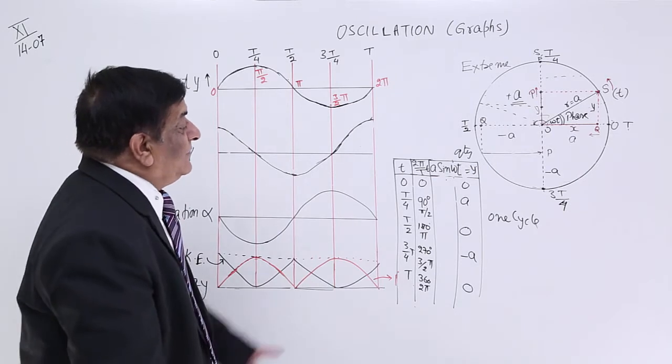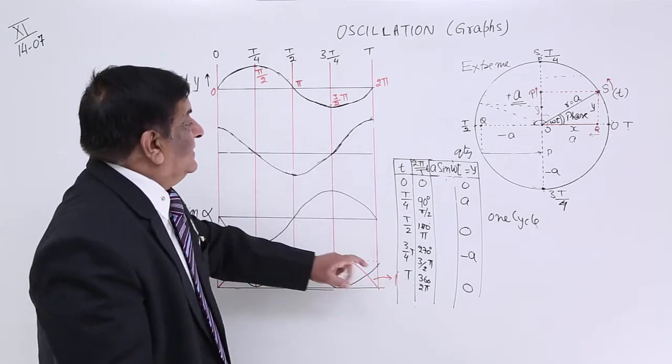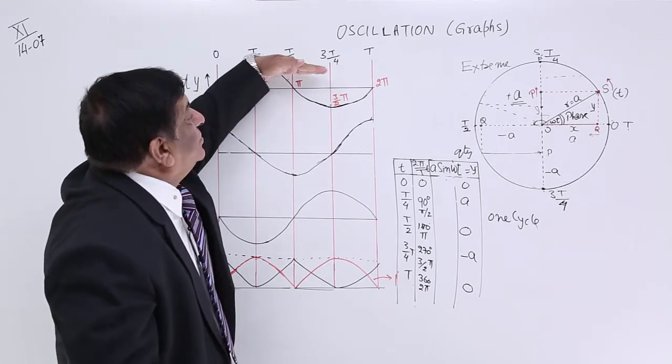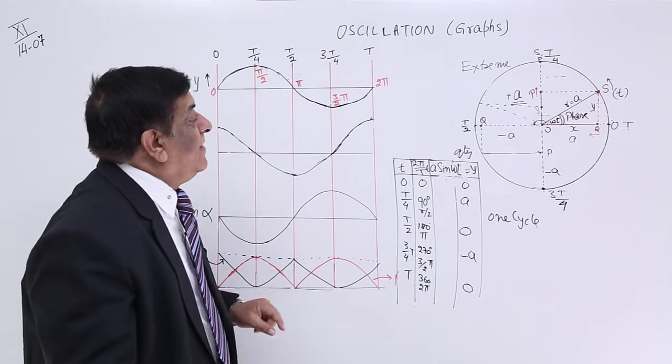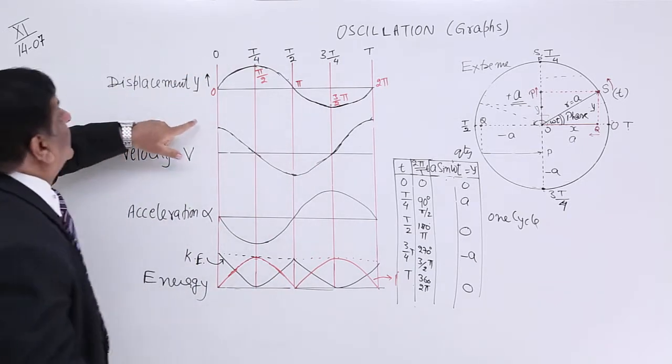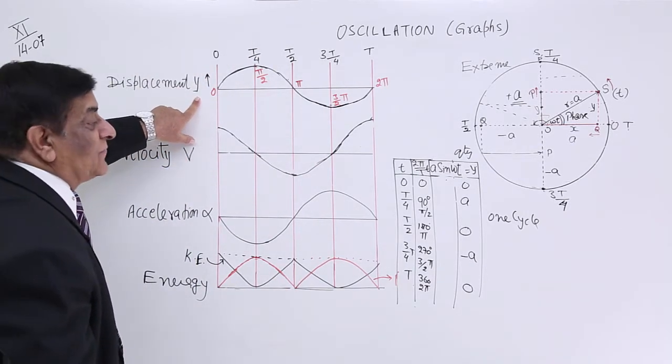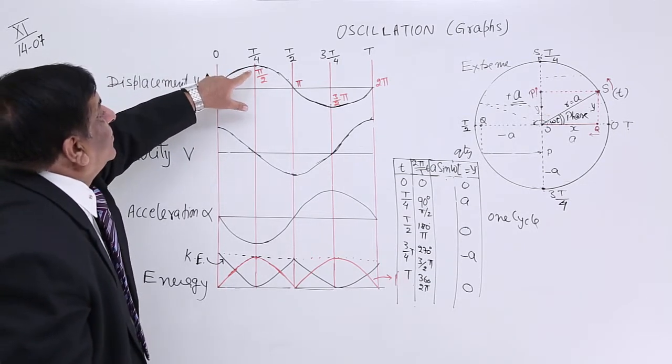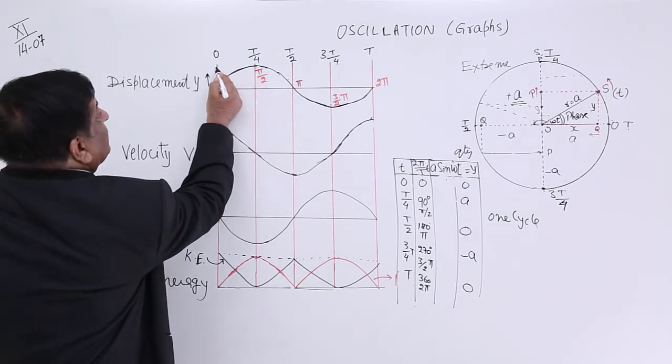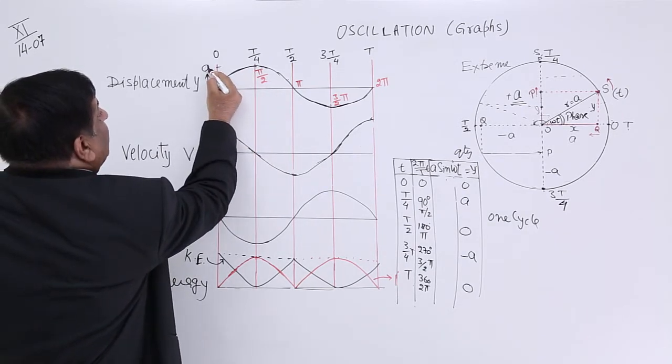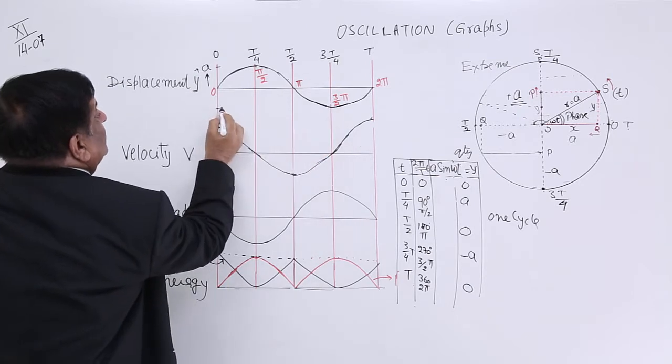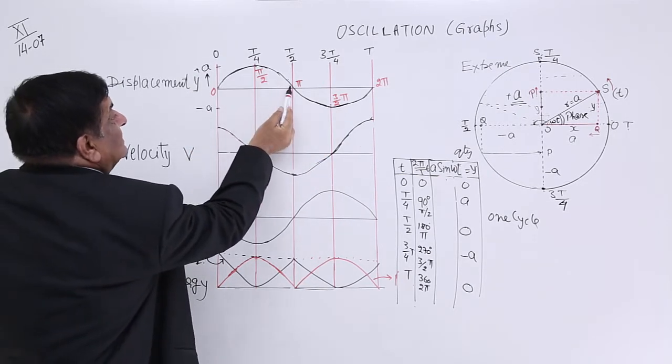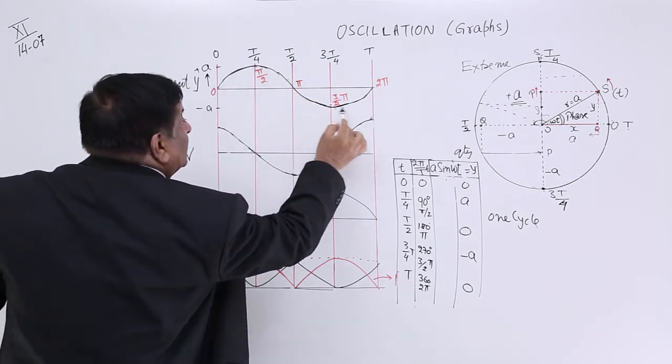So we make a graph. First on X axis we take t: 0, t by 4, t by 2, 3 by 4 t, and t. On Y axis we take Y, that is displacement. At 0 it is 0, at t by 4 it is maximum and this maximum value is equal to A, minimum value is equal to minus A. So this goes to 0, plus A, 0, minus A, 0. This becomes the graph.